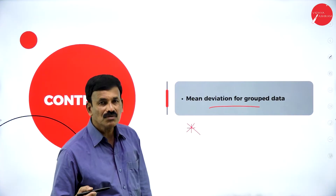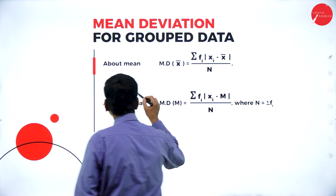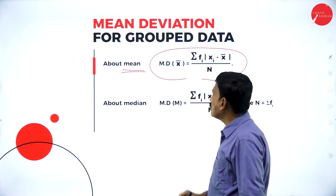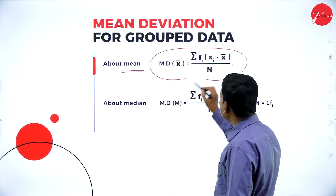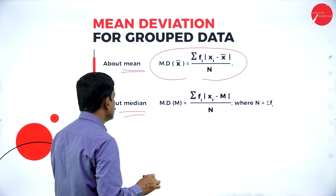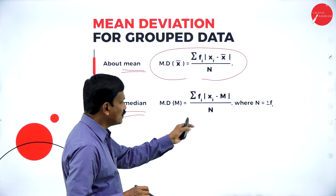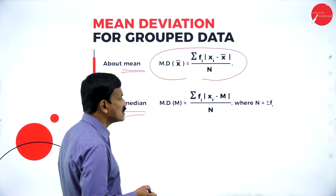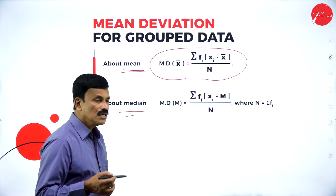Let us discuss the formulas we are going to use for mean deviation for grouped data. About the mean, the mean deviation is given by: x-bar equals sigma fi into mod(xi minus x-bar) divided by n, where n is the number of observations. About the median, the mean deviation is given by sigma fi into |xi minus m| divided by n, where n equals sigma fi.